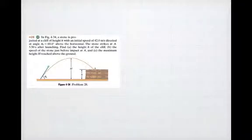So, here's Problem 28. It's basically talking about a stone being projected at a cliff which has a certain height. We're given the initial speed and also the angle at which it is fired above the horizontal. We know that the stone strikes the cliff at position A after a time of 5.50 seconds. So, what we're asked to do is find the height of the cliff, the speed of the stone just before the impact at A, and the maximum height reached above the ground.